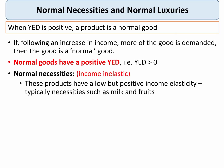We make a distinction between normal necessities and normal luxuries. Normal necessities have an income elasticity of demand of between zero and plus one. So for example if income increases by ten percent and the demand for a product increases by four percent, that would give an income elasticity of plus 0.4 — demand is rising less than proportionally to income. Typical necessities include everyday consumer products: bread, milk, and fruits.